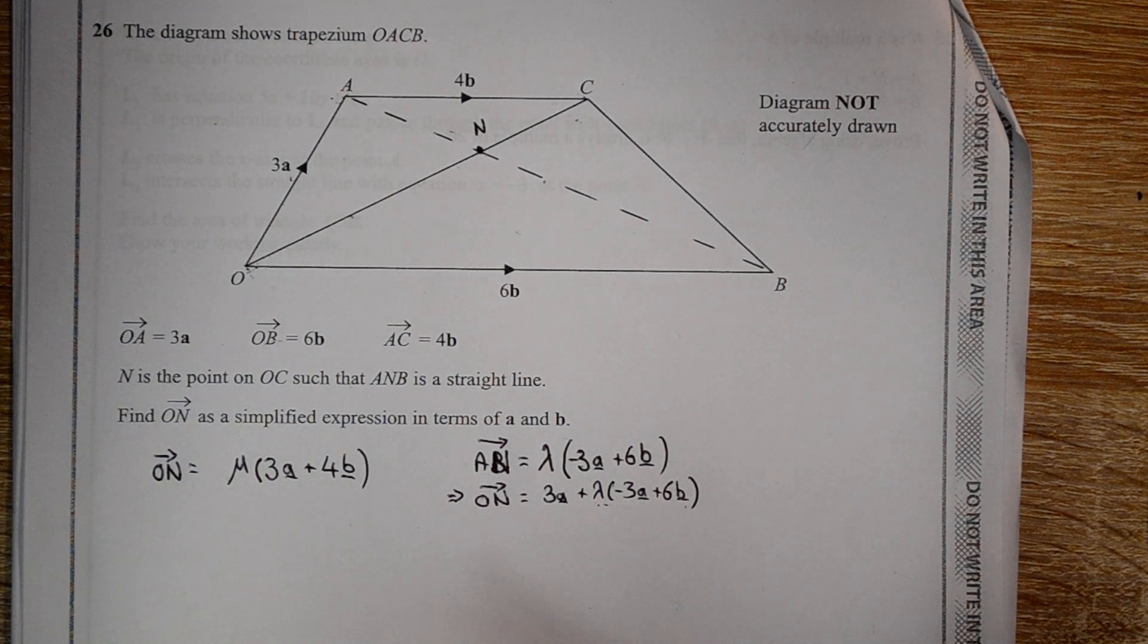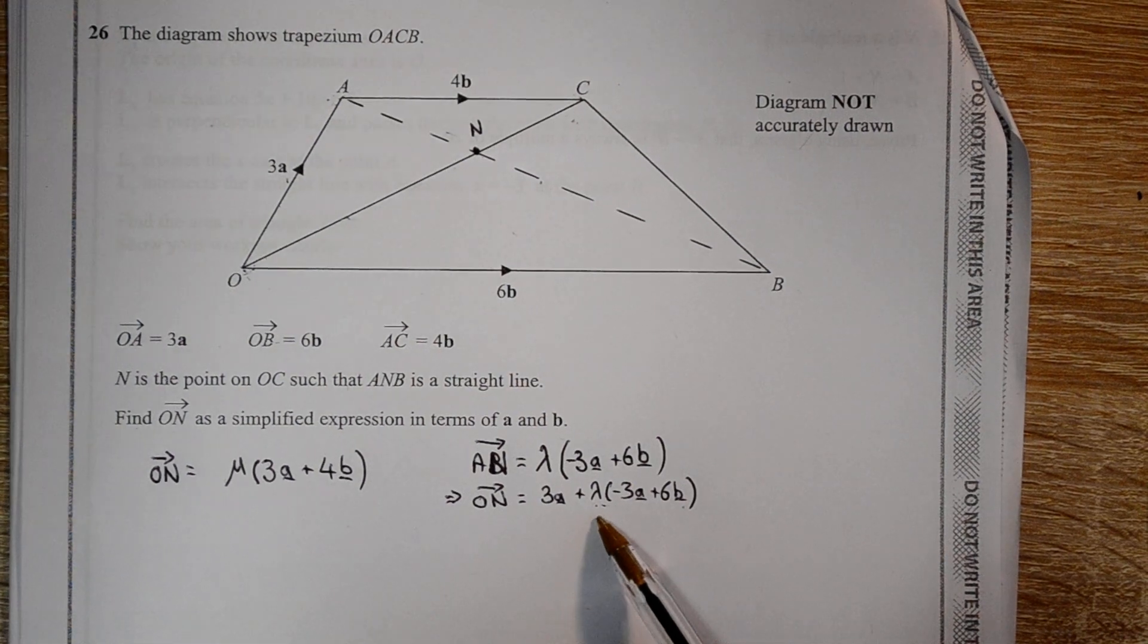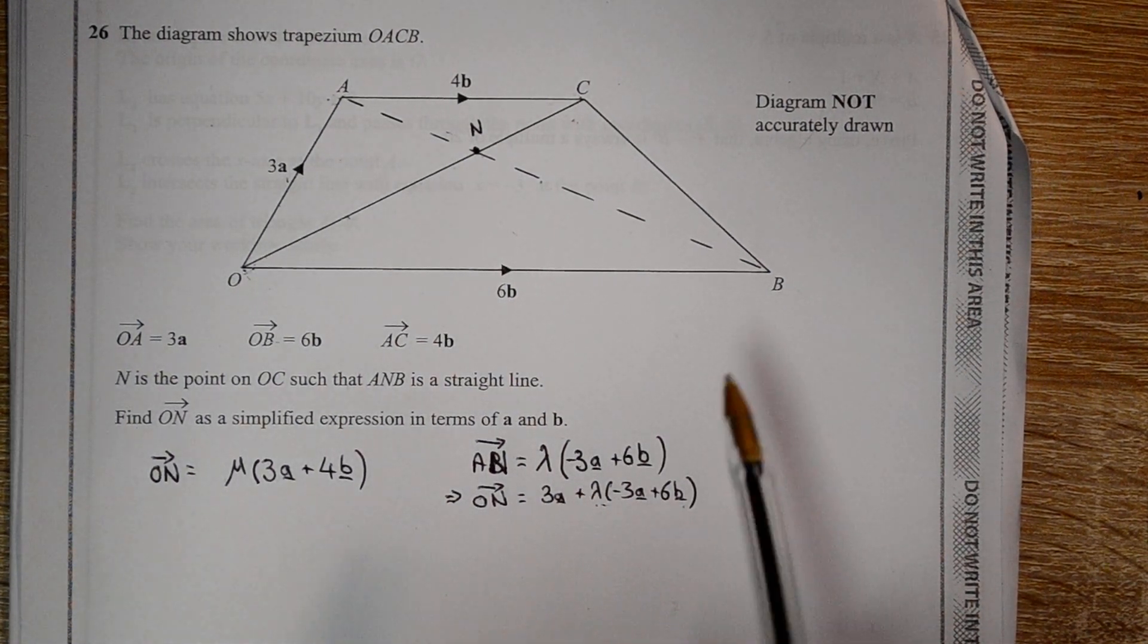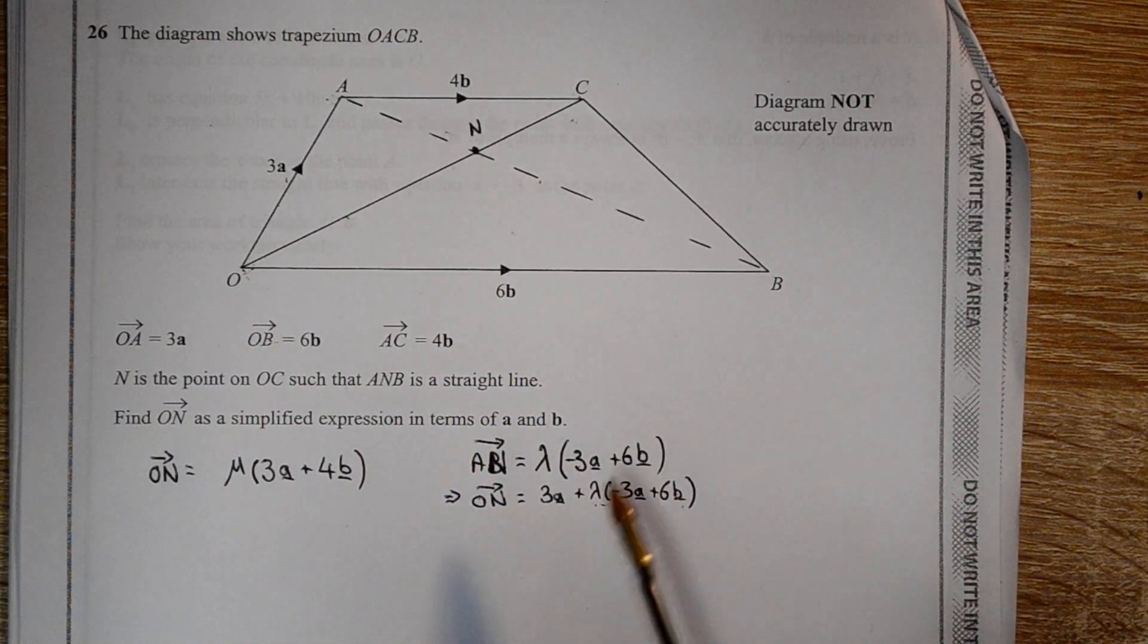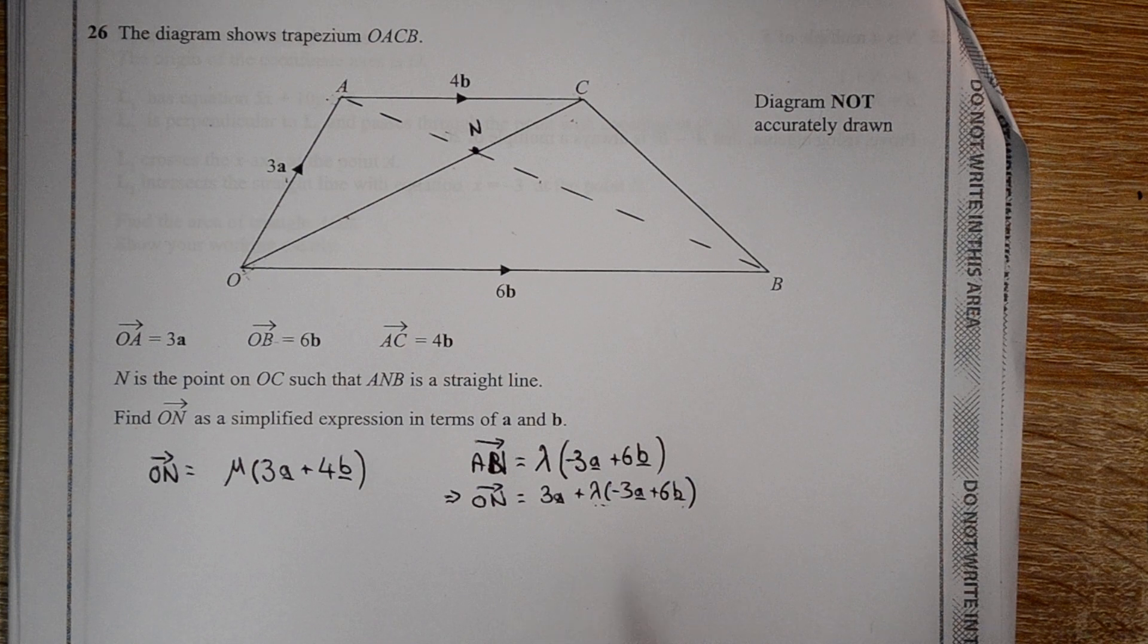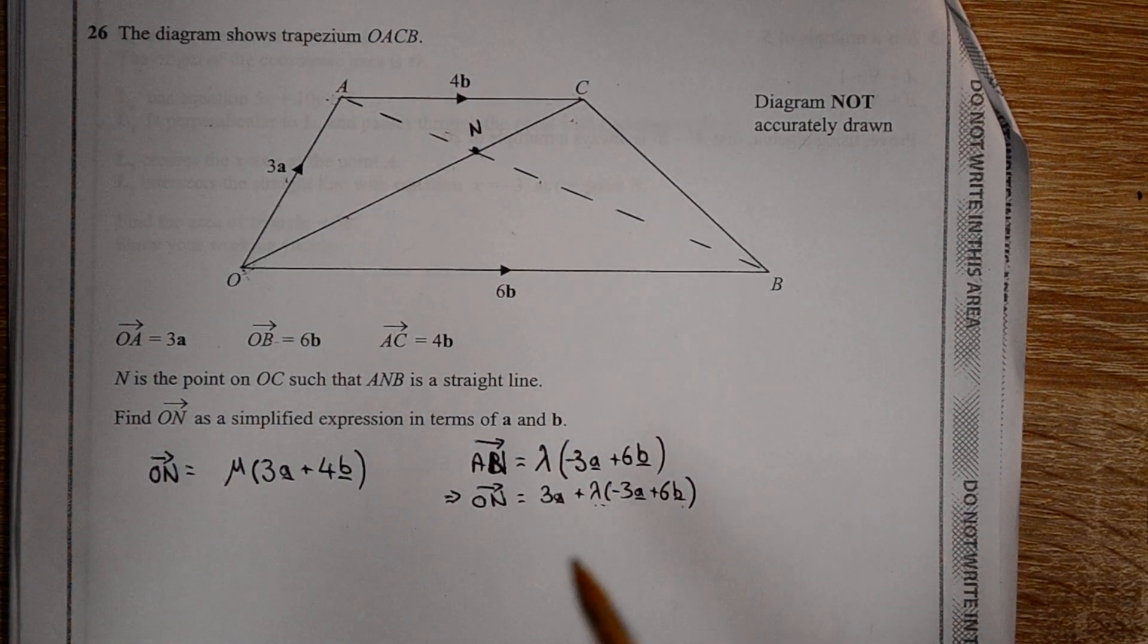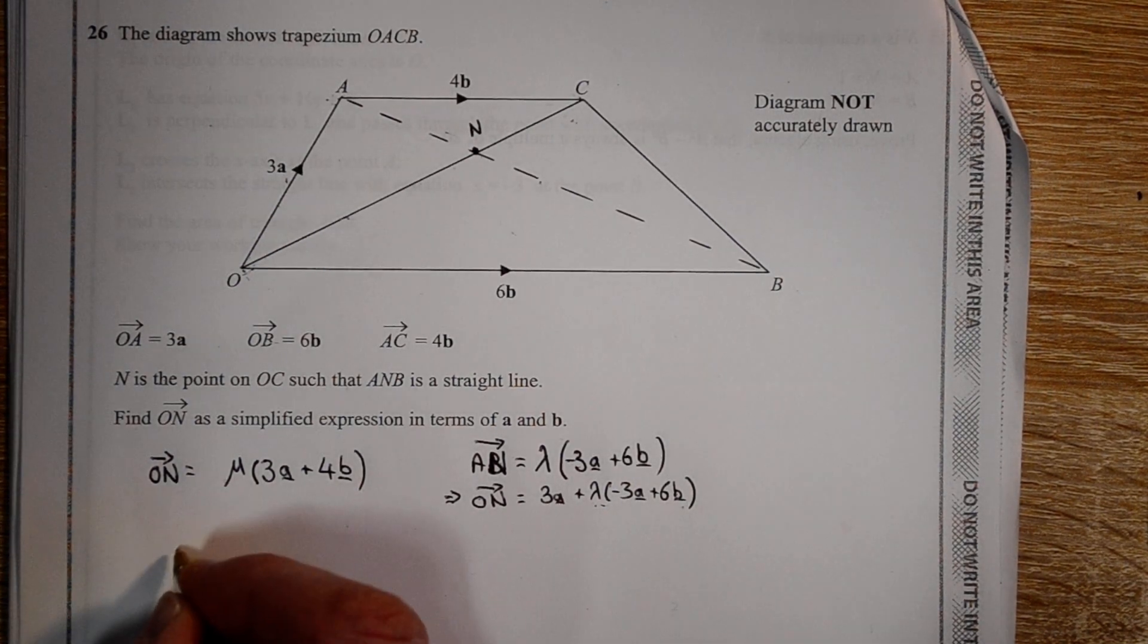So what we need to do now then is equate these two vectors, and where they intersect, that will be the point where mu is the fraction along the line where N is, and lambda is the fraction along this line where N is. Now we've got, if we equate these, let's do that.